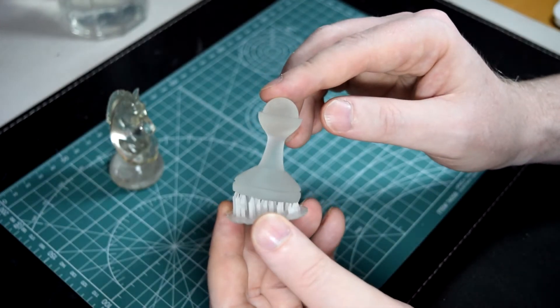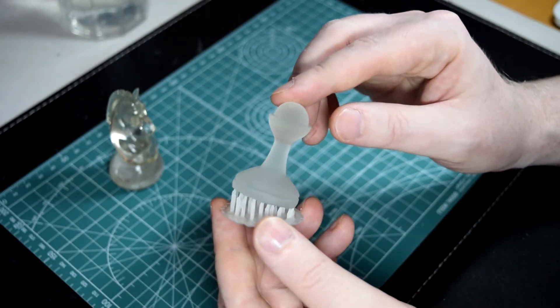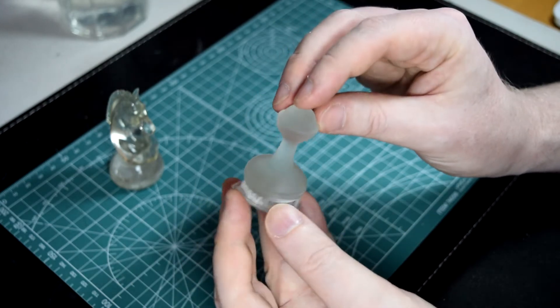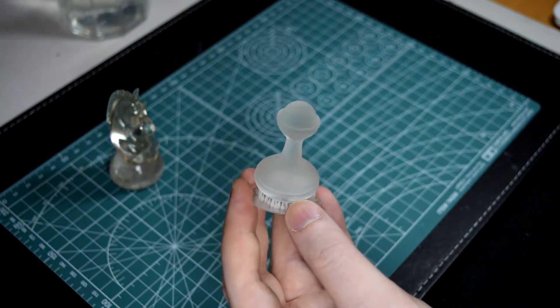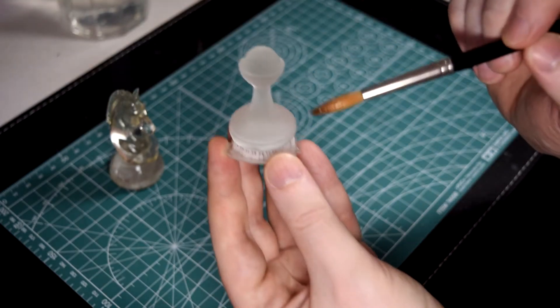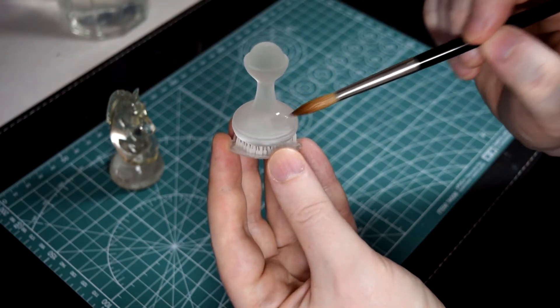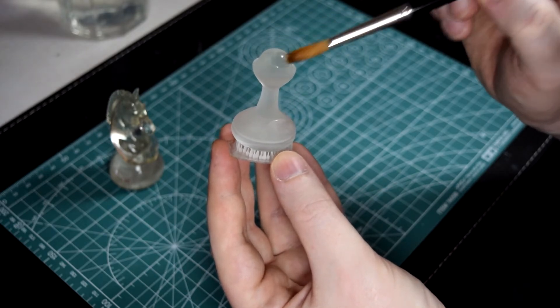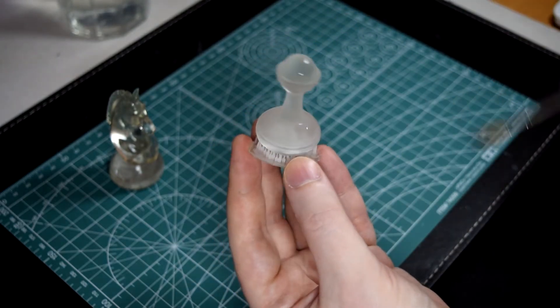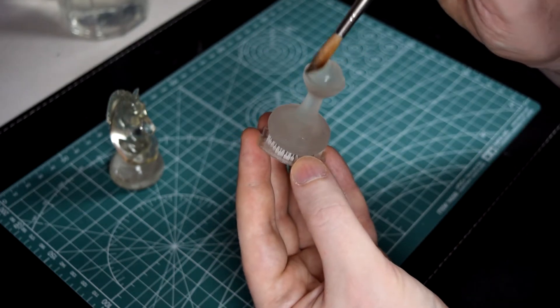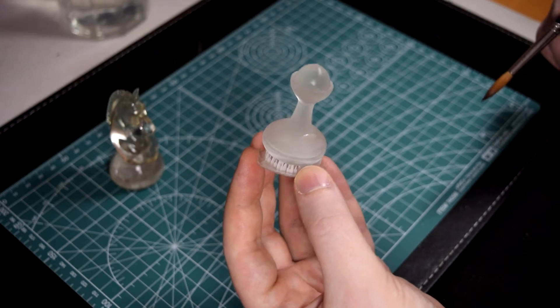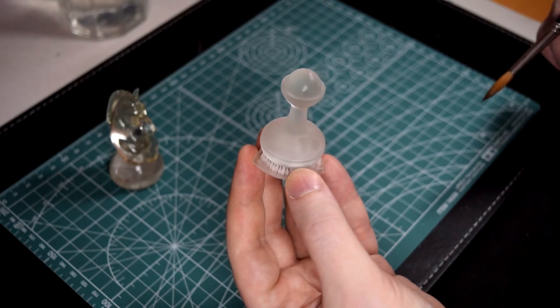This is how transparent resin prints look when they come straight off the printer and they've been washed. You'll notice it's not clear at all. It has a rough surface due to the 30 micron pixels in the printer and the layer lines. If I soak it with water though, it becomes glossy and clear. Because the water coats the tiny imperfections in the surface and makes it smooth, which allows the light to travel through it. But as the water evaporates, it returns to its matte finish.